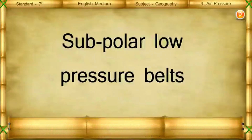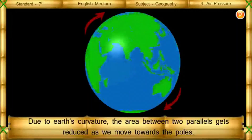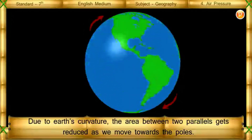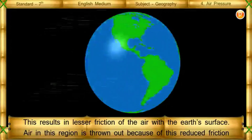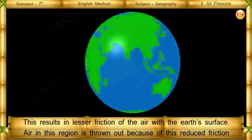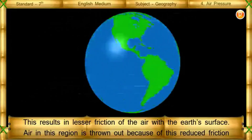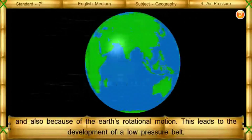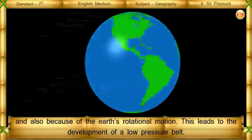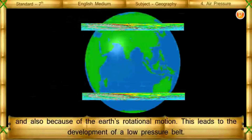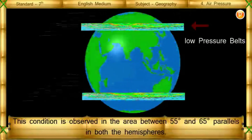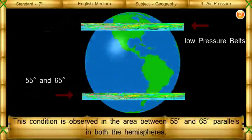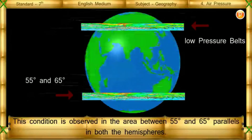Subpolar low pressure belts: Due to Earth's curvature, the area between two parallels gets reduced as we move towards the poles. This results in lesser friction of the air with the Earth's surface. Air in this region is thrown out because of this reduced friction and also because of the Earth's rotational motion. This leads to the development of a low pressure belt, observed in the area between 55 degrees and 65 degrees parallels in both hemispheres.